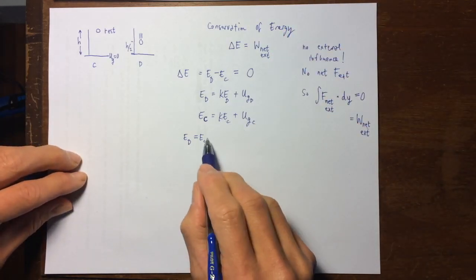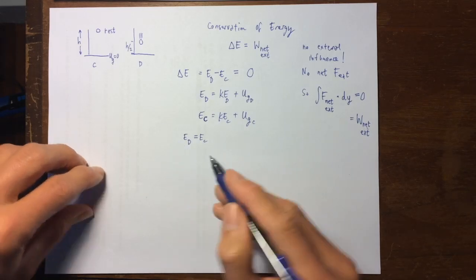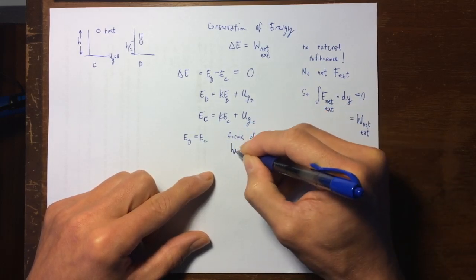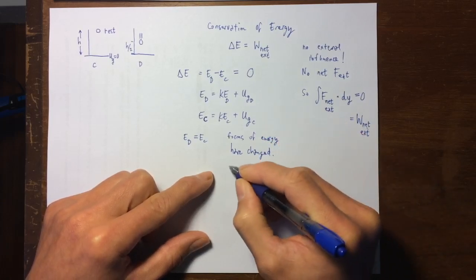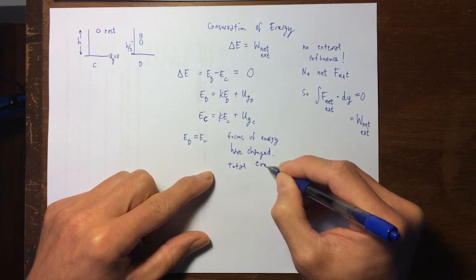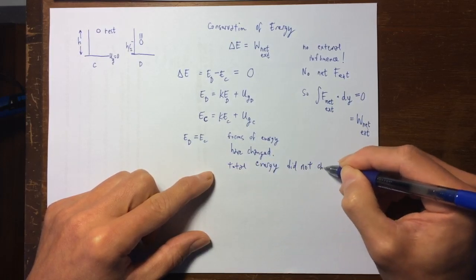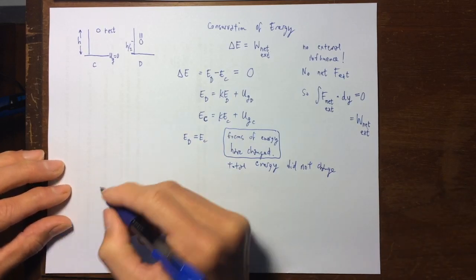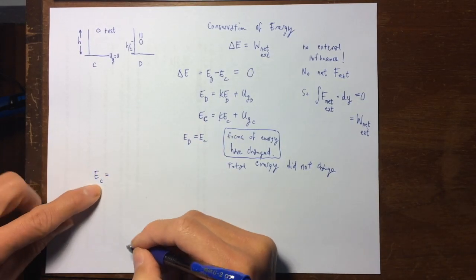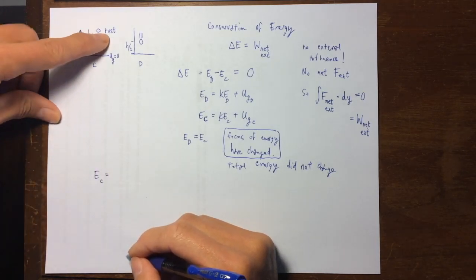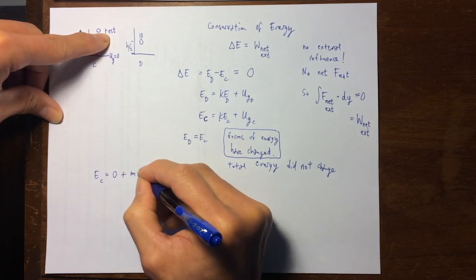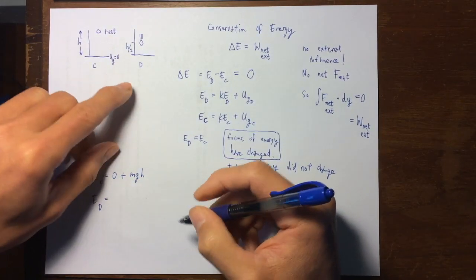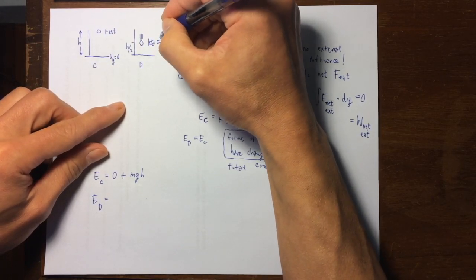The total energy has not changed, but the forms of the energy have changed. Let's see this happen. EC is the total energy in situation C: there is no kinetic energy, but there is gravitational potential energy. At ED, the kinetic energy is definitely not zero, but I don't know how much kinetic energy there is in situation D, so I'll write a placeholder.